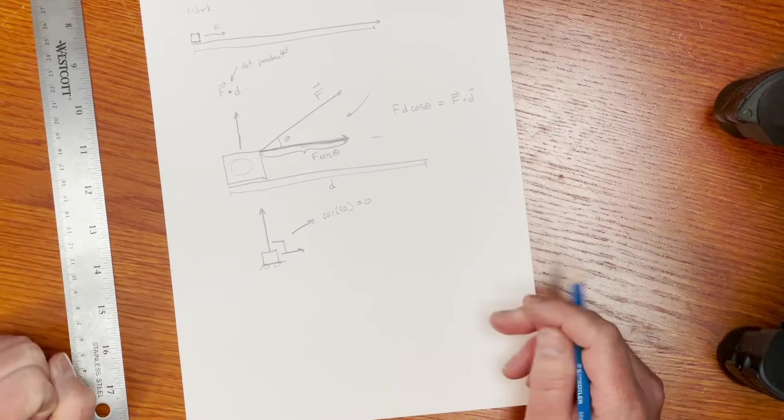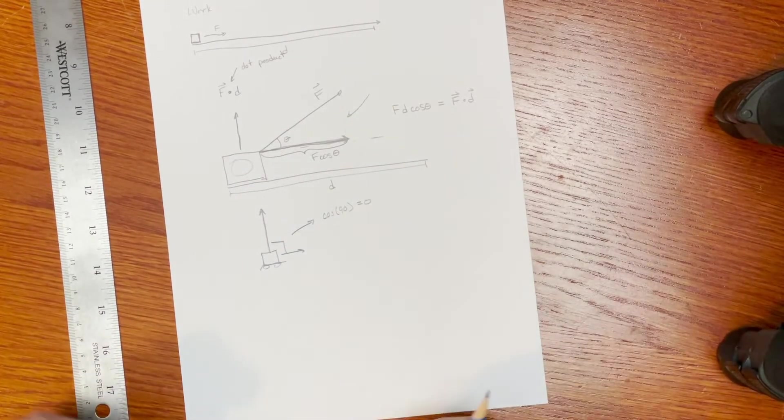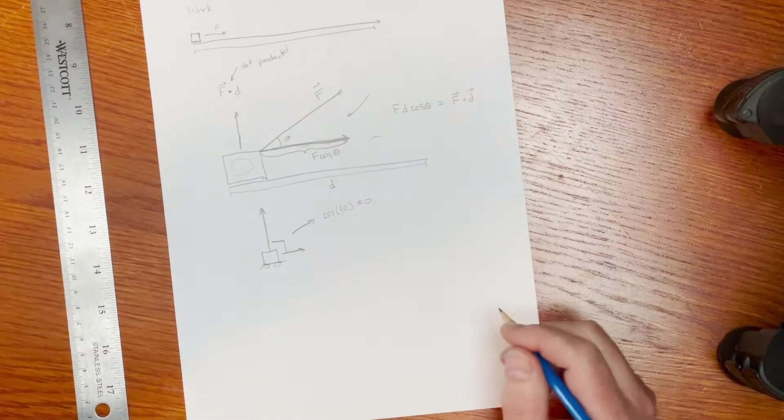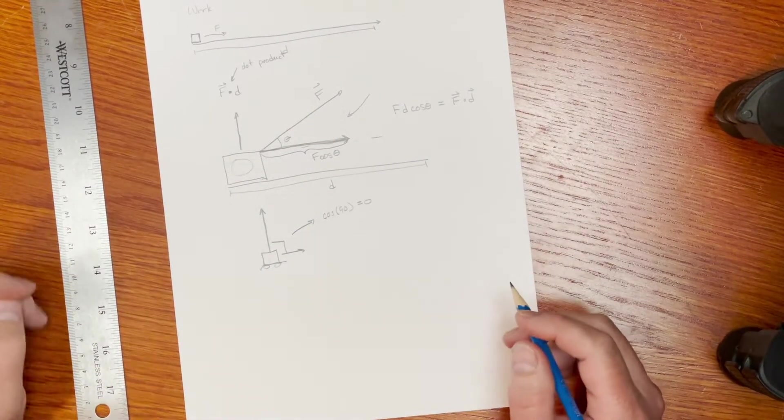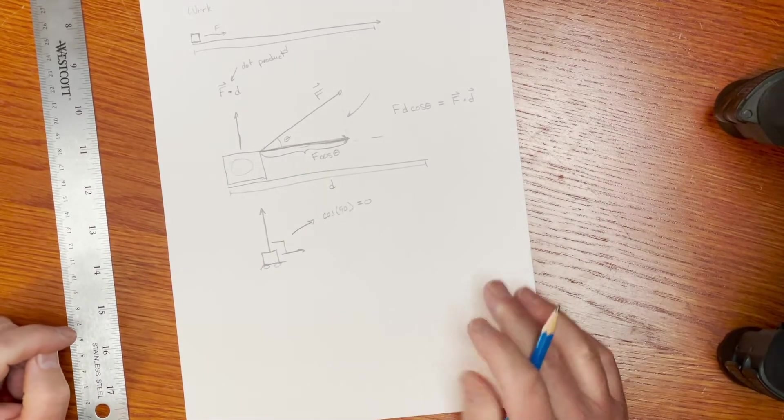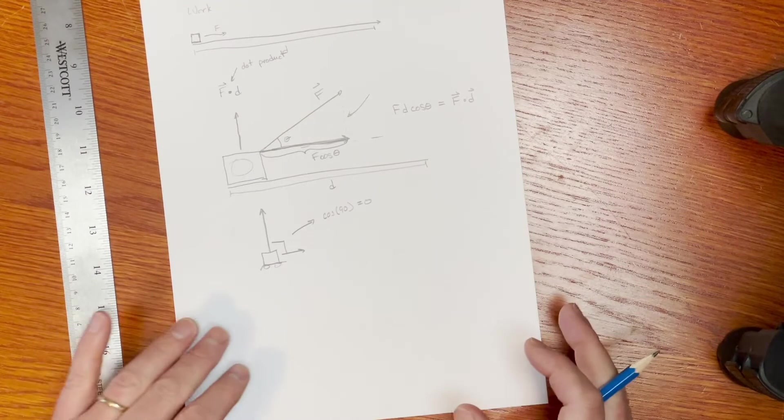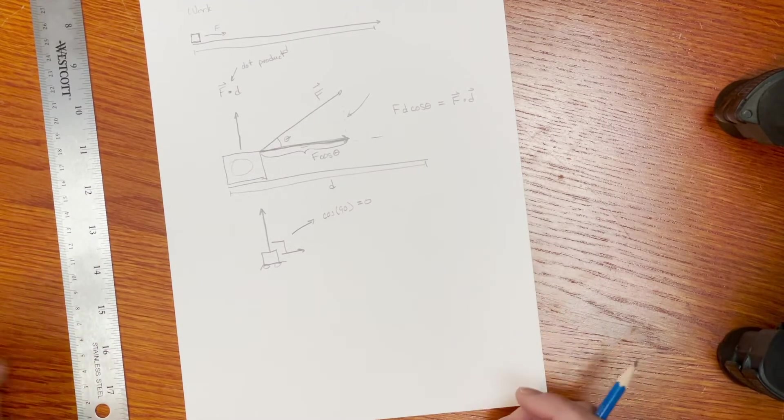And so we often talk about work done on an object, or work done by an object, depending on the sign. So there's going to be a sign to the work, whether it's putting energy into the object we're interested in, or taking energy out of the object we're interested in. And we'll see that when we work on a few of our problems here.